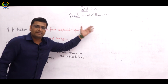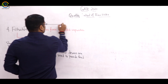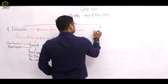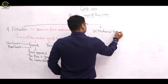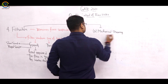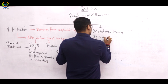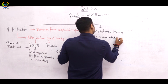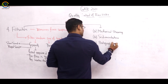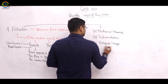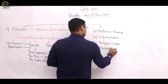These four stages are present in any filtration process and on the basis of these, impurities are removed. The four stages are: first, mechanical straining; second, sedimentation; third, biological changes; and fourth, electrolytic changes.